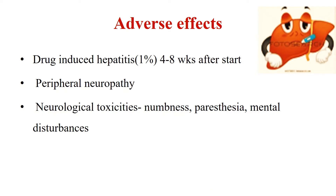Regarding adverse effects of isoniazid: drug-induced hepatitis is the major side effect. The next is peripheral neuropathy. For preventing peripheral neuropathy or neuritis, we usually administer 10 mg pyridoxine per day along with isoniazid. The neurological abnormalities are numbness, paresthesia, or mental disturbances. These are rare compared to other side effects.